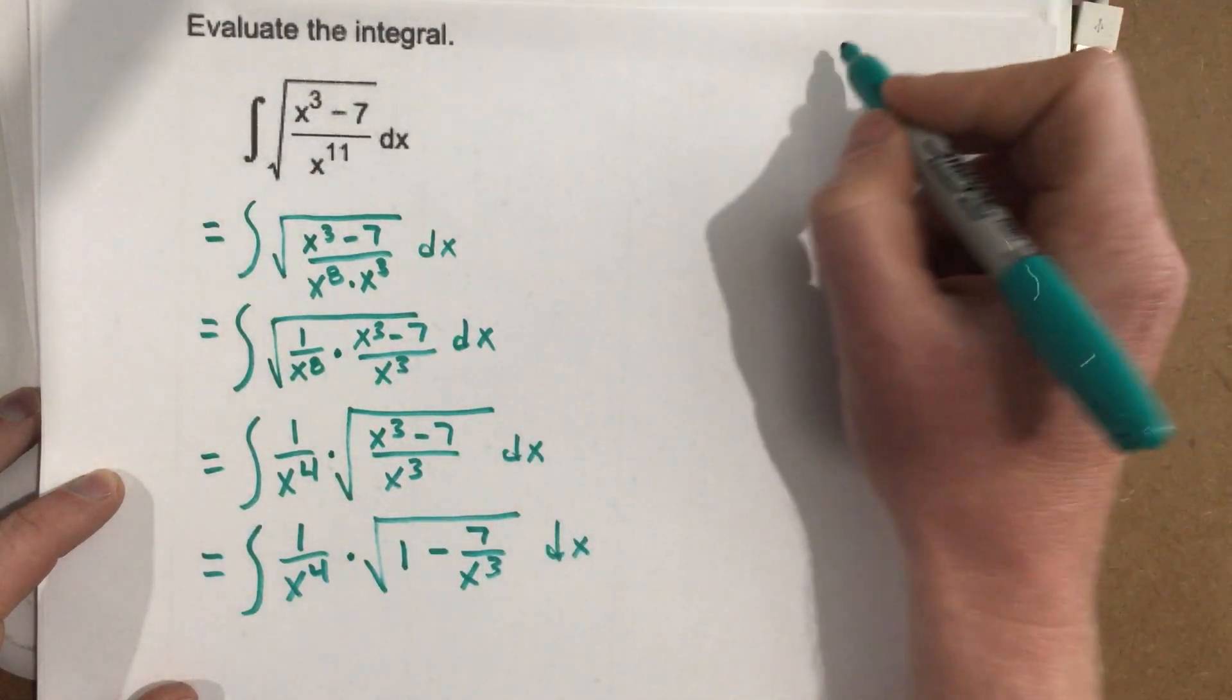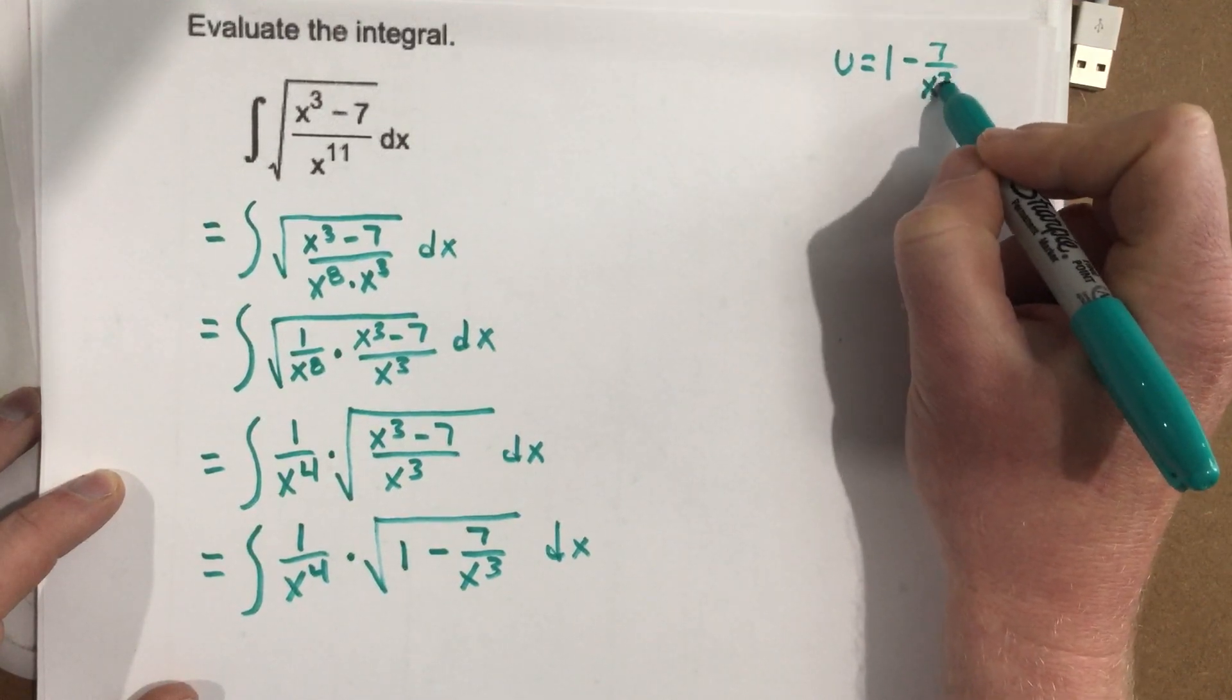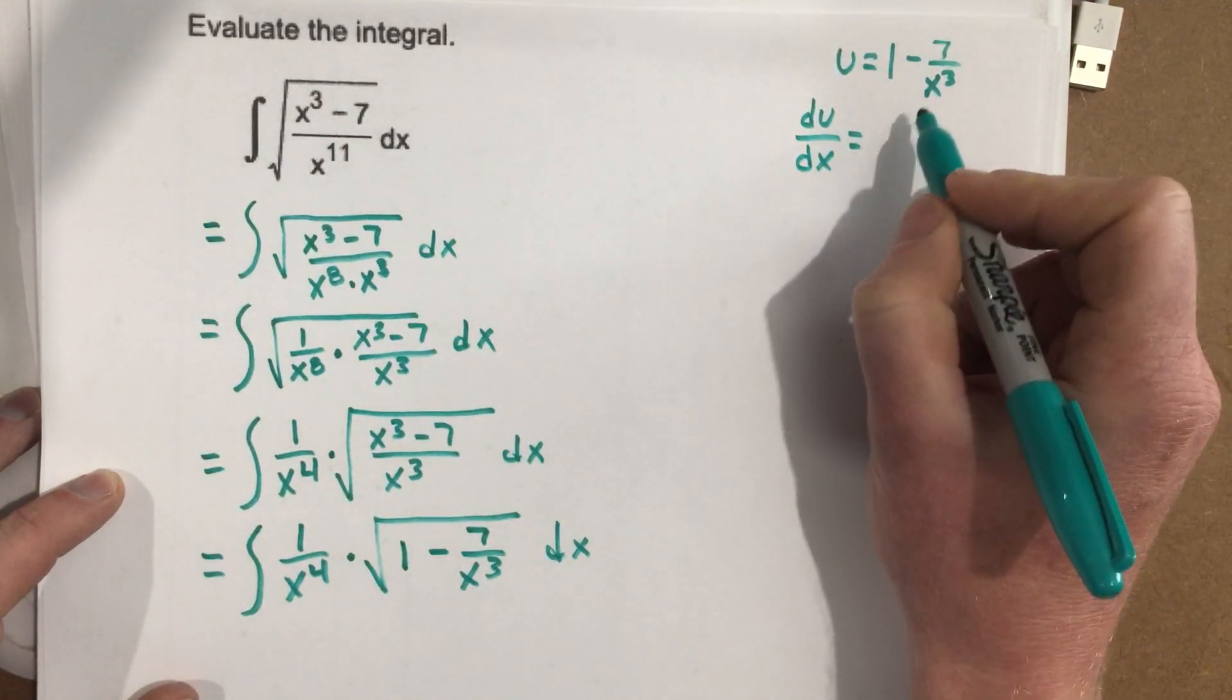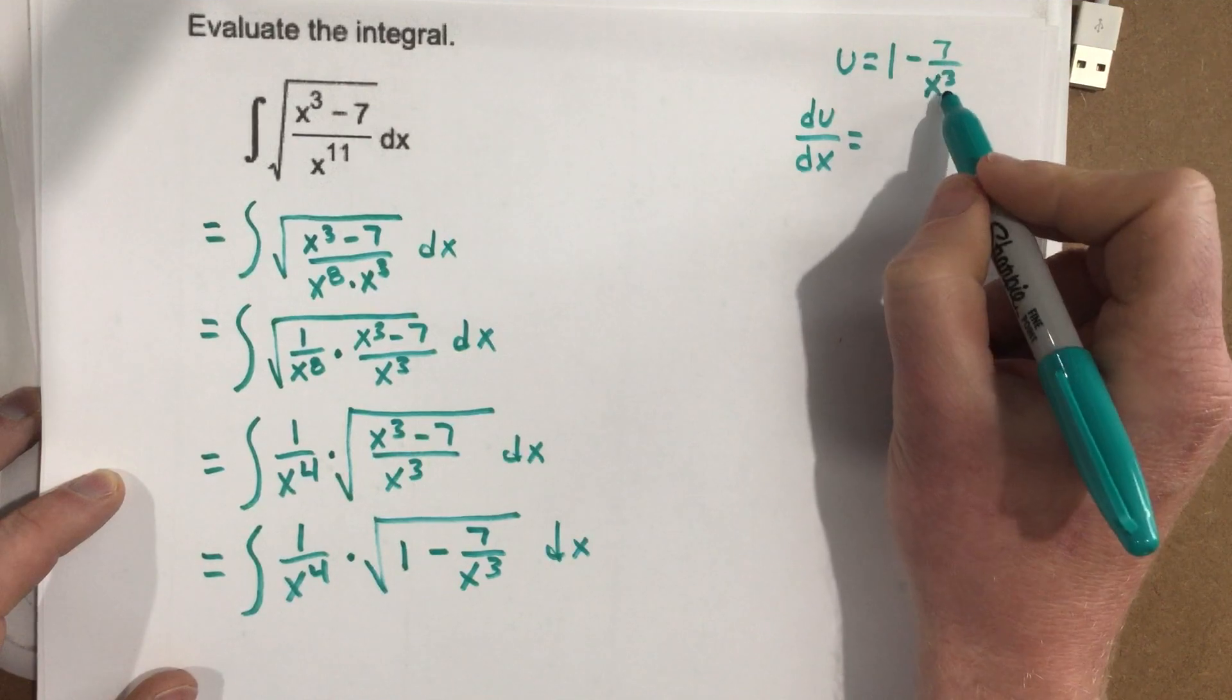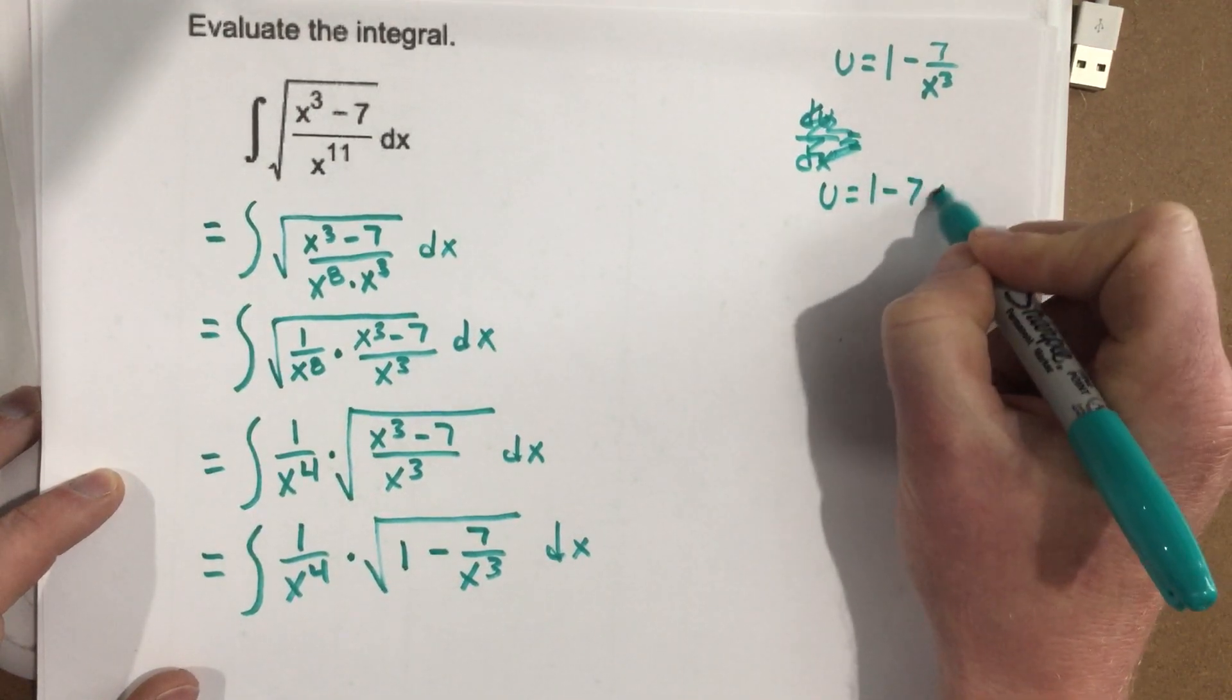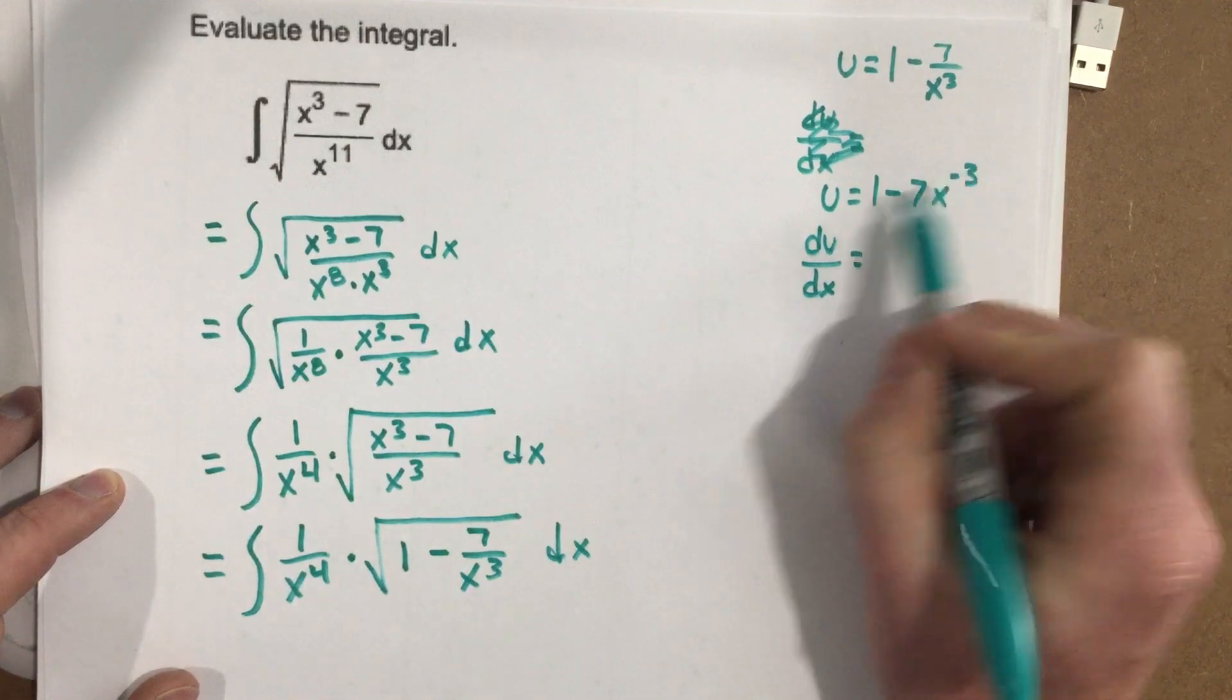So let's see it work. I'm going to say u, and I'll write that up here in the top corner, u equals 1 minus 7 over x to the third. So du over dx equals, if I do the derivative here, this will just be zero. So then I'll need to rewrite this as, so I'm actually going to do a little intermediate step here. Instead of doing that, I'm going to say u equals 1 minus 7 x to the negative 3. Now I'm going to do du over dx.